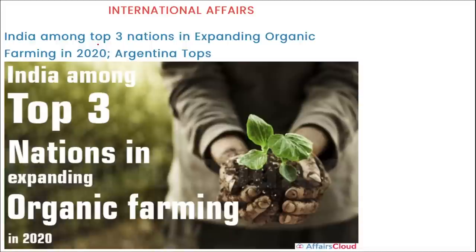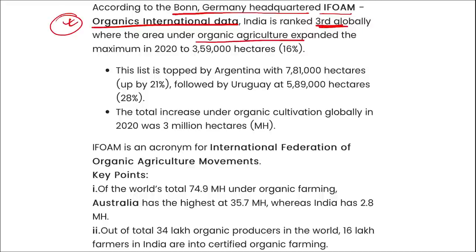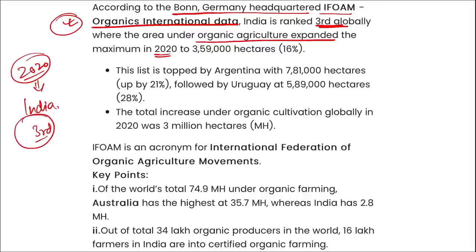India is among the top three nations in expanding organic farming in 2020. According to Bonn, Germany-headquartered IFOAM Organics International data, India ranked third globally for the area under organic agriculture that expanded the most in 2020. India's land under organic agriculture expanded to 359,000 hectares, which is almost 16% growth.